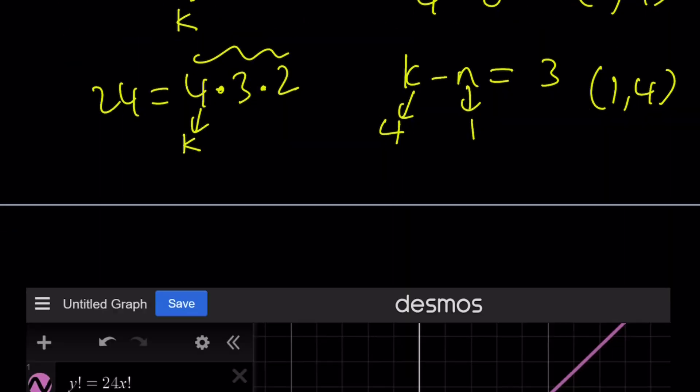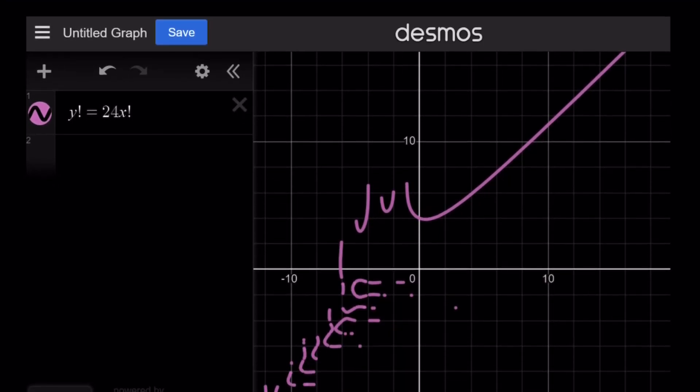Let me show you the graph. The graph doesn't mean much, but it's just a fun graph to look at: y factorial equals 24x factorial. It's a really weird shape. Desmos cannot fully resolve this because there are many issues. But you'll notice that this is our n value and this is our k value. If you look at the n values here on the x-axis, for 0 and 1, you get the same y values or k values.